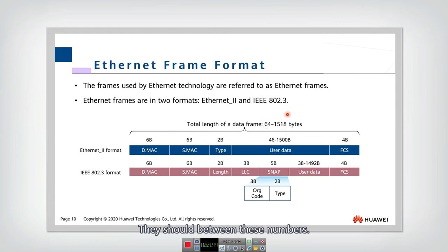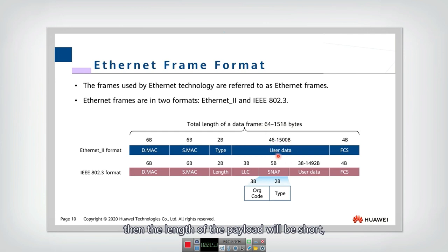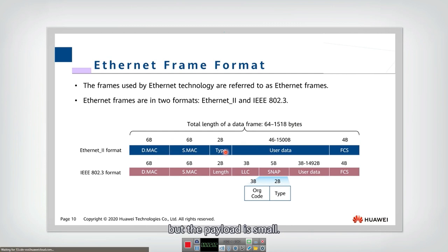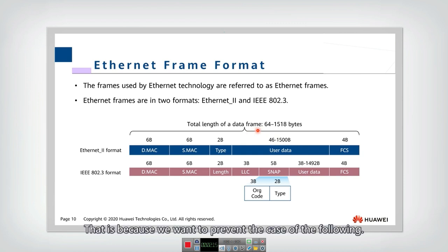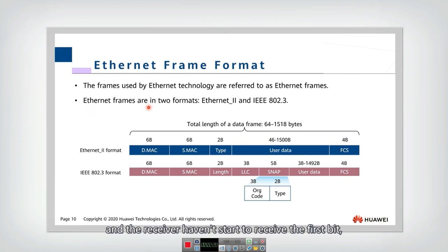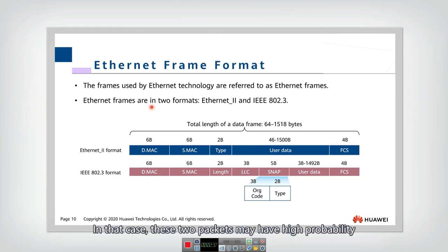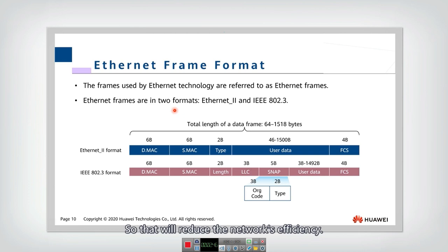The length of the data frame should not be too short or too long. If the frame length is too short, the payload will be short but the header cannot be reduced, so the overhead remains the same while the payload is small, making transmission efficiency lower. Also, the frame should not be too short because we want to prevent collisions: if a sender finishes sending a packet before the receiver has started receiving the first bit, the receiver may transmit its own packet, and the two packets will likely collide in the media, reducing network efficiency.